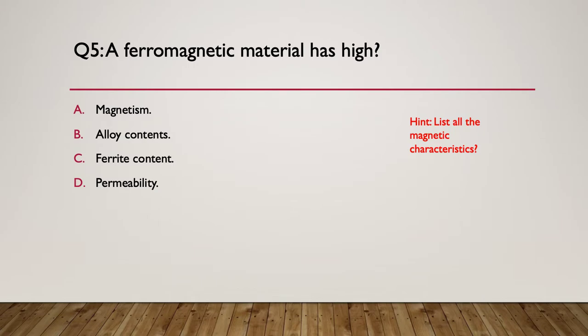Here's your hint: list all the different types of magnetic characteristics and consider how they apply to something that is ferromagnetic. The answer is D — permeability. You don't have high and low levels of magnetism. Alloy content and ferrite content don't tell you a great deal. But a ferromagnetic material has high permeability because it conducts a magnetic field easily and well.